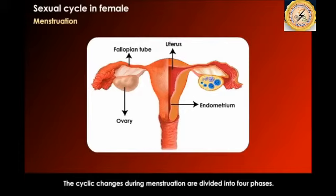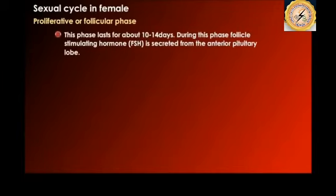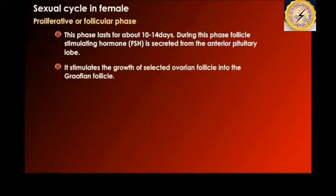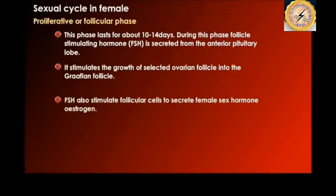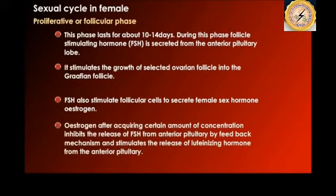The cyclic changes during the menstrual cycle are divided into four major phases. The first is the proliferative or follicular phase, which lasts 10 to 14 days. During this phase, follicle-stimulating hormone (FSH) is secreted from the anterior pituitary gland, stimulating the growth of a selected ovarian follicle into the Graafian follicle. FSH also stimulates follicular cells to secrete estrogen.